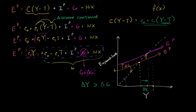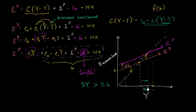In the last video, we saw how the Keynesian cross could help us visualize an increase in government spending, which was a shift in our aggregate planned expenditure line right over here. We saw how the actual increase in output — taking all of the assumptions we made — meant the actual change in aggregate income was larger than the change in government spending.